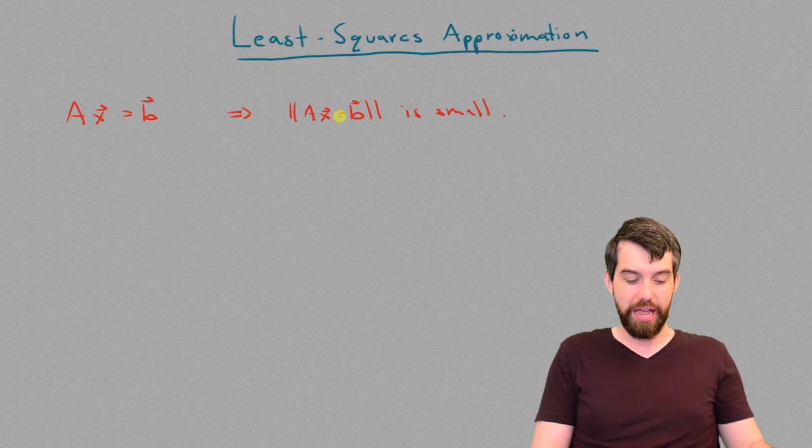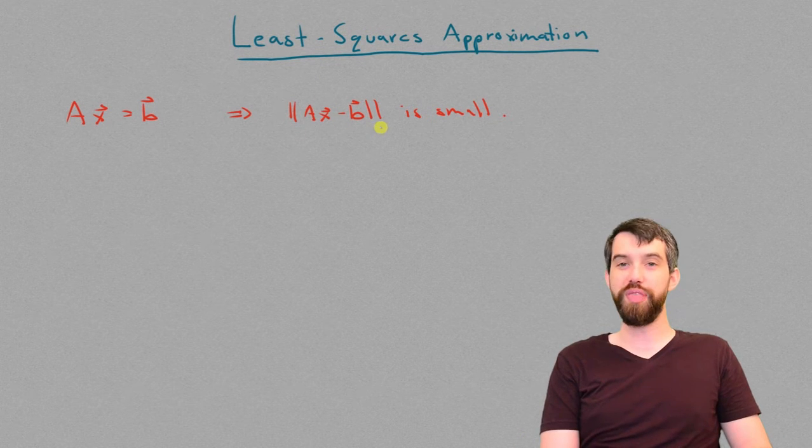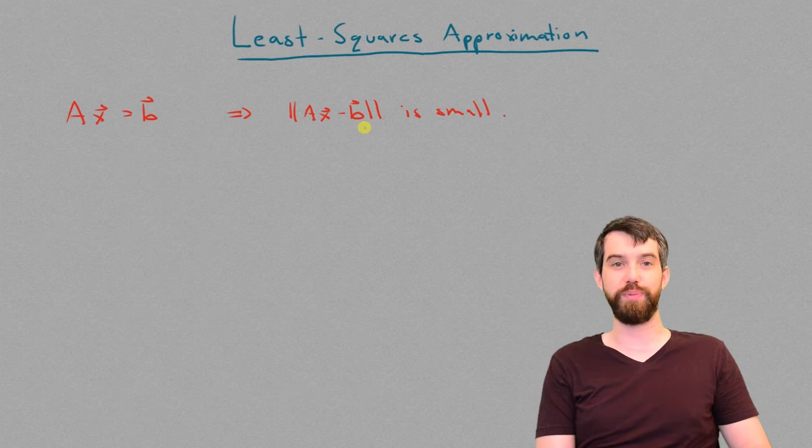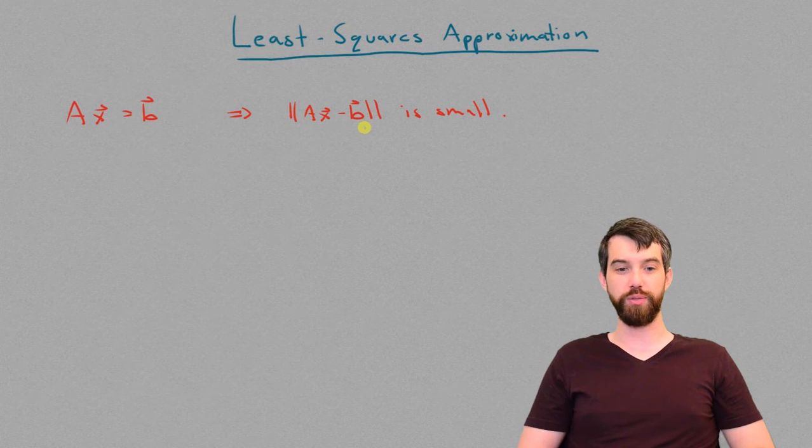So when we say a least squares approximation, that's what we're referring to, that we want this length here, the distance between ax and b, to be as small as possible.